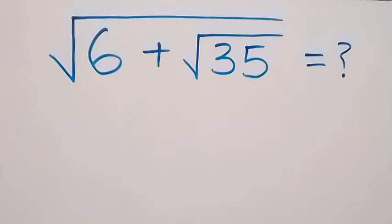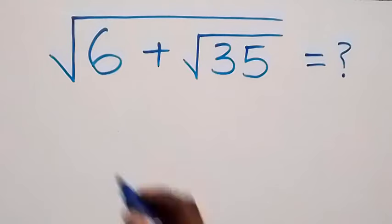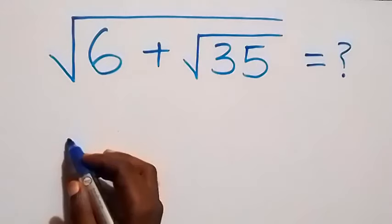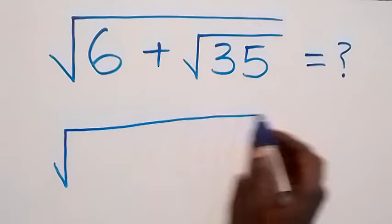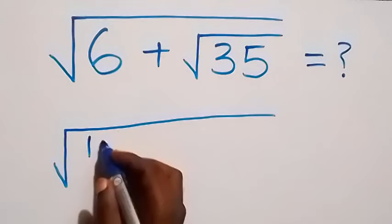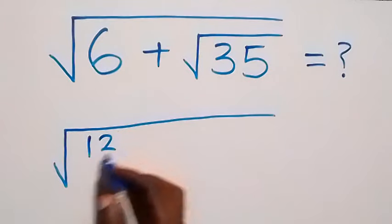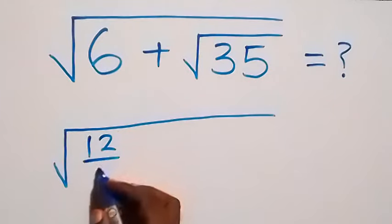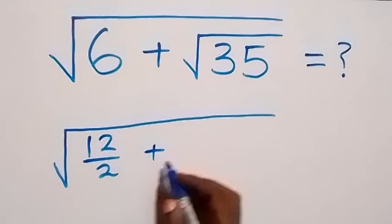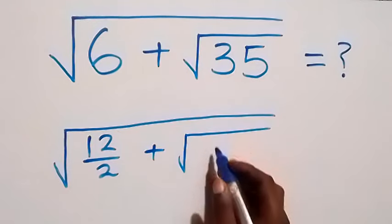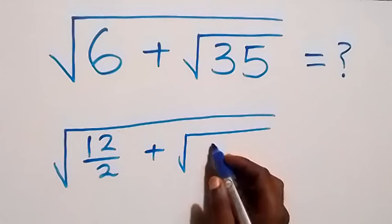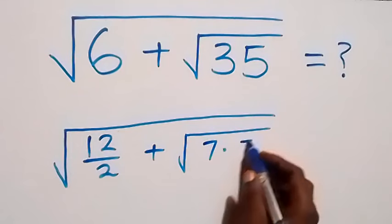Hello, you are welcome. How to solve this nice square root problem. What we have here, we can write this as square root of 6, writing it as 12 over 2, then plus here we have square root of 35, converting as 7 times 5.